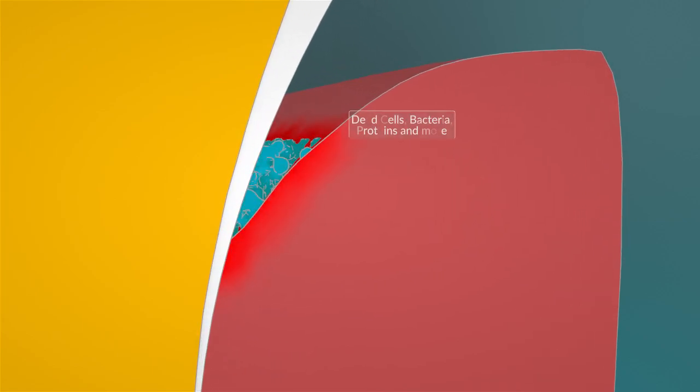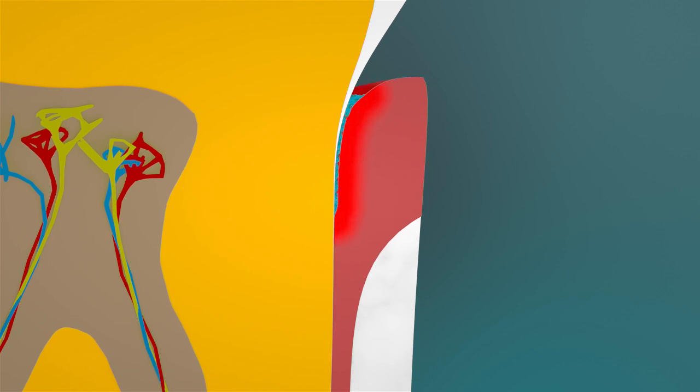Dead cells and bacterial metabolic processes usually play the main role here. This is initially known as gingivitis. As soon as the gums lose the ability to adhere to the tooth, we speak of periodontitis. It progresses over years and decades. Gum pockets develop. Because bacteria enter the bloodstream, the inflammatory processes also lead to the breakdown of bone tissue.